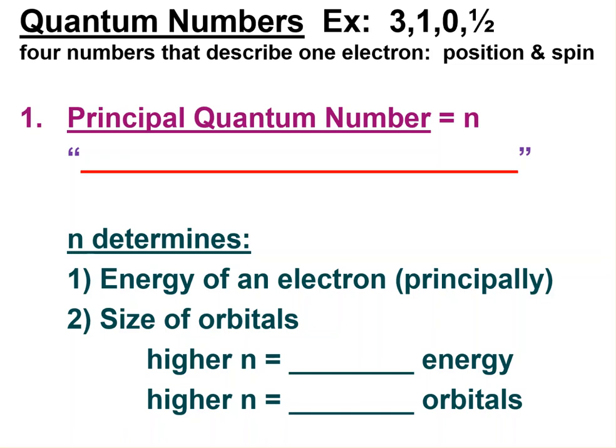Quantum numbers are just a set of four numbers that represent where one electron is and also its spin. The first number, in this case the three here, represents the principal energy level.